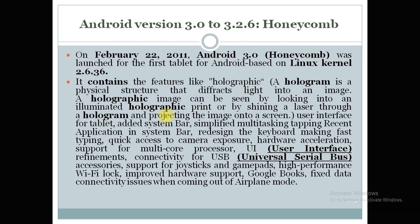Honeycomb contains a feature called holographic. Holographic is a collection of light capable of producing an image — based on the shining of a laser, it illustrates an image on the screen. The holographic feature is the biggest feature in Honeycomb; it projects an image on the screen with the help of laser light.